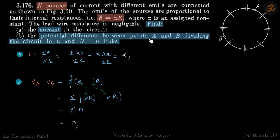So these are the number of batteries 1 to n and across one battery, the potential drop is, potential difference is E minus IR. So E is given as alpha R, so we put that and I we just calculated as alpha.